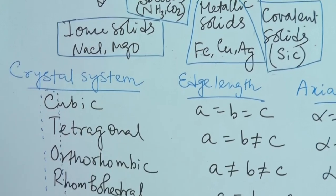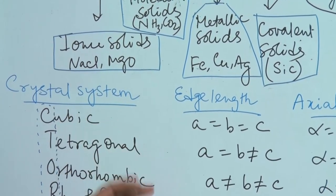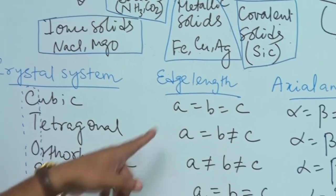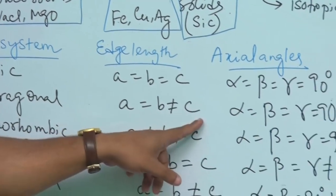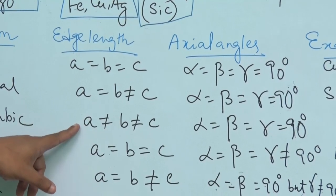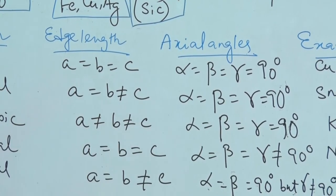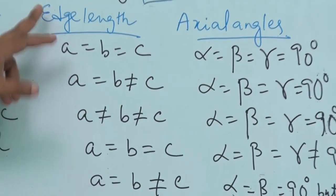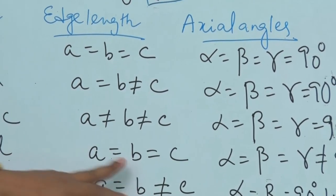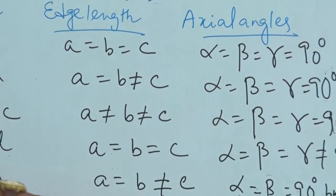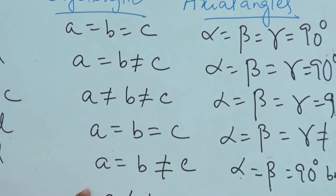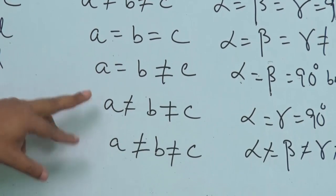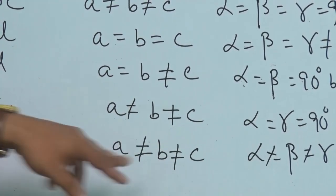To remember the edge lengths: in the first case (cubic), a = b = c; in the second case (tetragonal), a = b but not equal to c; in the third case (orthorhombic), a, b, c are all unequal; in the fourth case (rhombohedral), again a = b = c; then a = b but c is not equal; then a, b, c are all unequal; and the last case also has a, b, c all unequal.